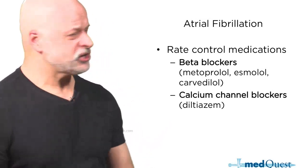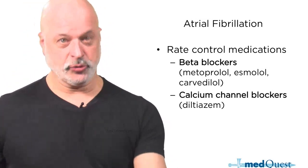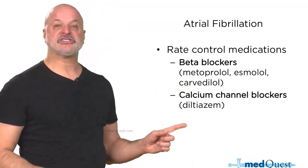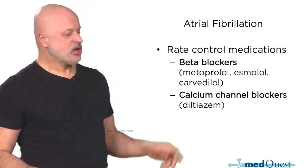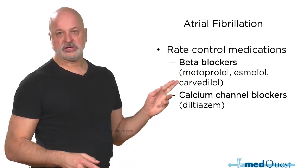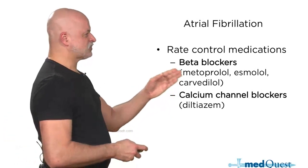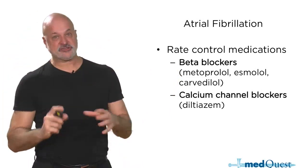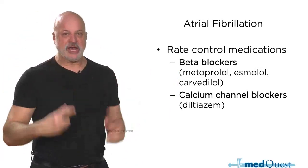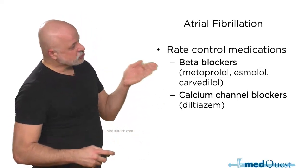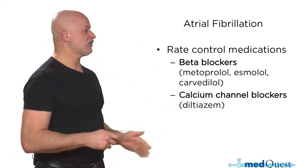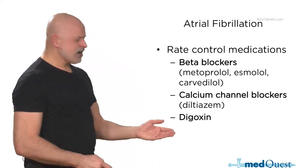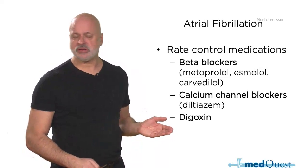You can't just order a 'calcium blocker' — you have to specify Diltiazem. You can't just say 'beta blocker' — you have to say Metoprolol. Unless there's a specific indication like propranolol for essential tremor, migraine prophylaxis, or social anxiety, you can go through life knowing Metoprolol. Digoxin can also control the rate in AFib quite nicely, though it has fallen somewhat out of fashion.